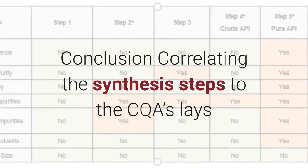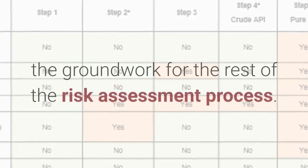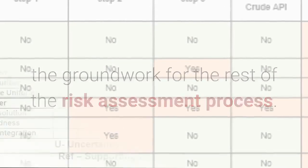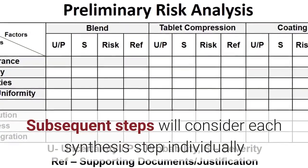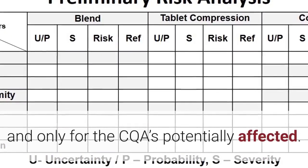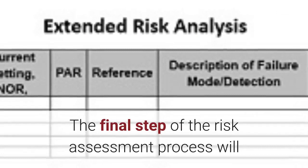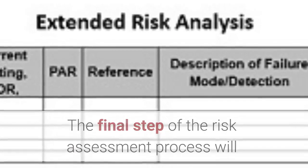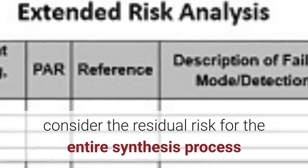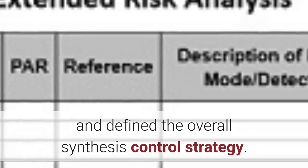Correlating the synthesis steps to the CQAs lays the groundwork for the rest of the risk assessment process. Subsequent steps will consider each synthesis step individually and only for the CQAs potentially affected. The final step of the risk assessment process will consider the residual risk for the entire synthesis process and define the overall synthesis control strategy.